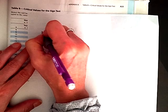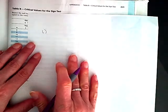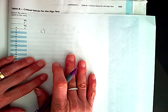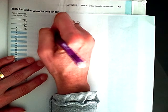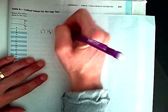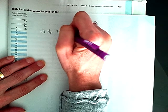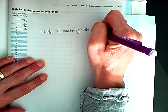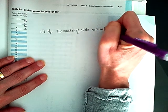So for step 1 in this paired sample test, I'm going to look at whether the colds were decreased or not. So in my null hypothesis, I'm going to say the number of colds will not decrease.